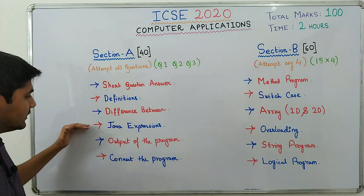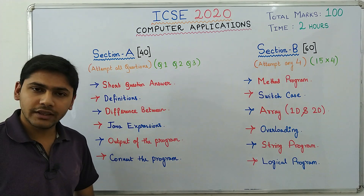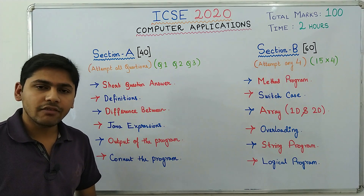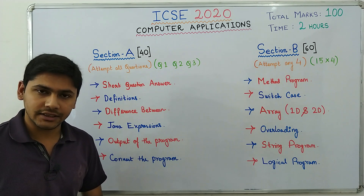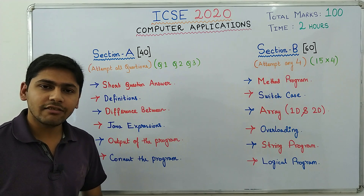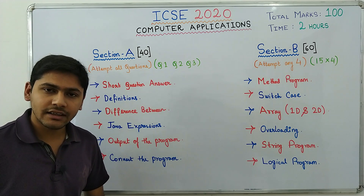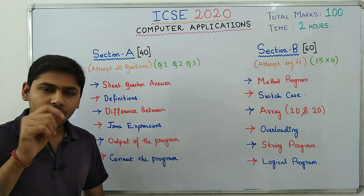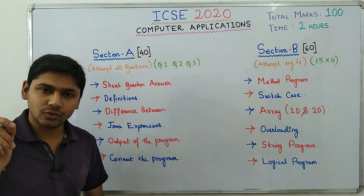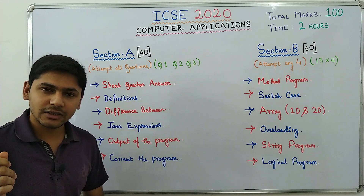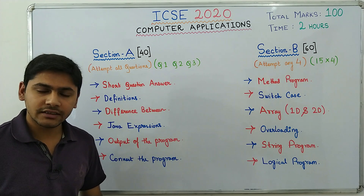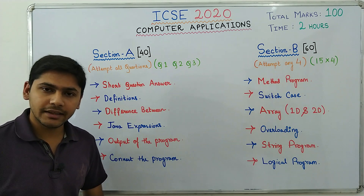Then you have Java expressions. In Java expressions you have two things. First, a mathematical formula will be given and for that formula you will have to write the Java expression. Secondly, you will have a prefix and postfix calculation — for example, you have to calculate things like y equals y plus minus minus y minus plus plus y plus y minus minus. One question on prefix and postfix will definitely be there.